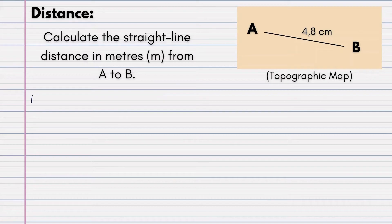The formula for distance would be your distance on your map, so let's put DM, multiplied by your map scale. So obviously since this is a topographic map, it would be 1 is to 50,000. However, they want the answer in meters.